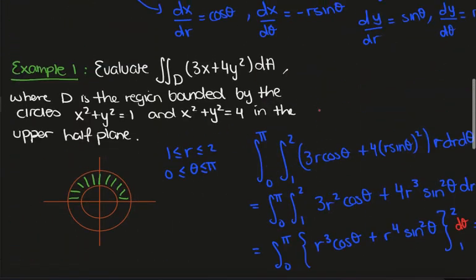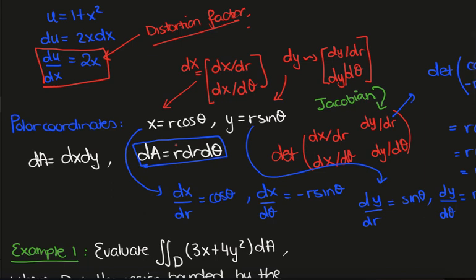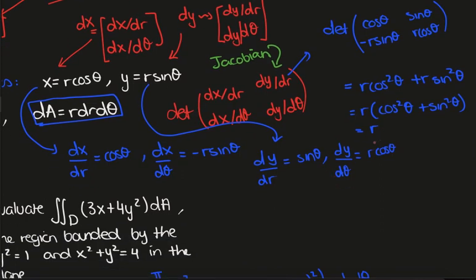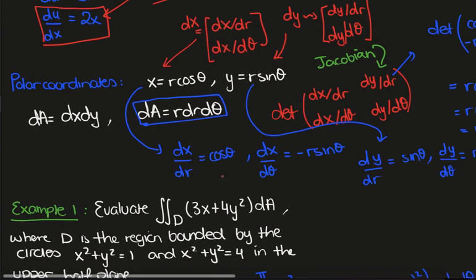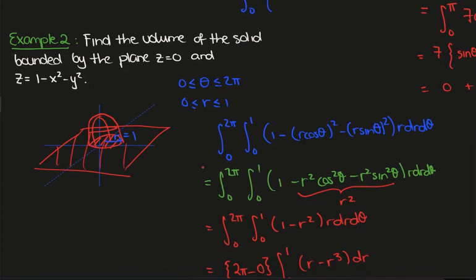Let's briefly review the main points. Whenever we change variables, we have a distortion factor to account for. In the one-dimensional case it's not obvious it's a determinant, but in higher dimensions — when taking two variables to another pair — we need the determinant of the Jacobian matrix. In the case of polar coordinates, the distortion factor is exactly r, so dA becomes r dr dθ. Polar coordinates are particularly handy for circular regions: annuli, paraboloids, and similar shapes.